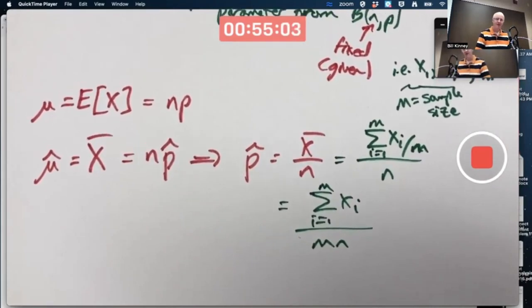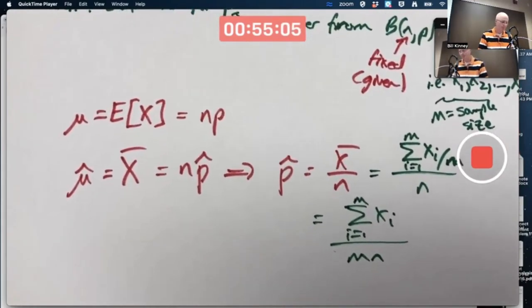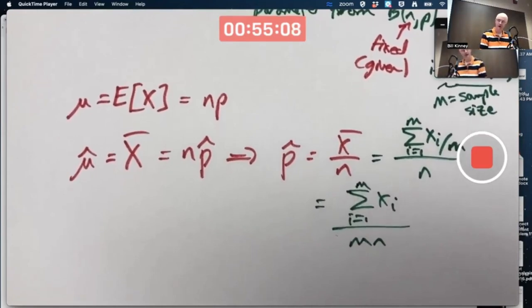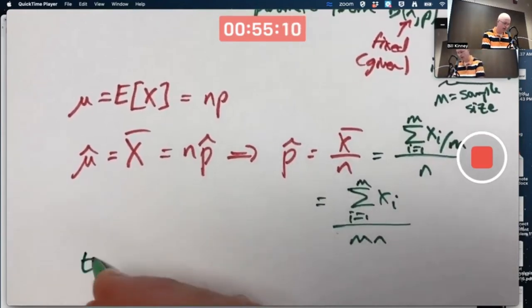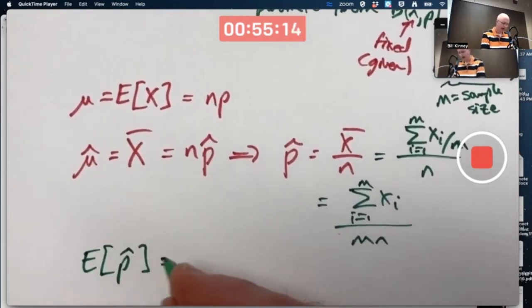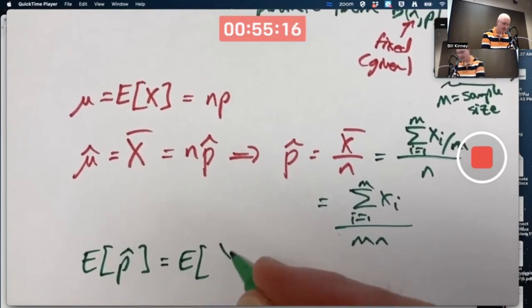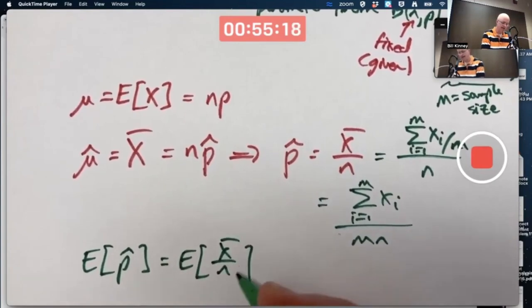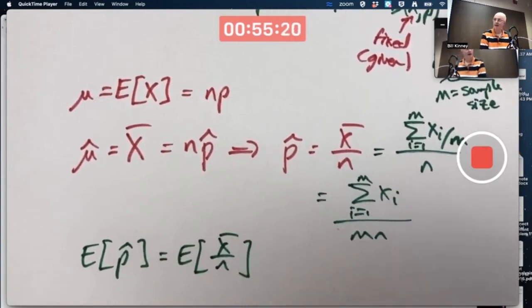Is p̂ found with the method of moments unbiased? You thought about this kind of thing for your homework as well. What's the expected value of p̂? Here I can use properties of expectation because the x̄ is in the numerator, not the denominator like the last example.